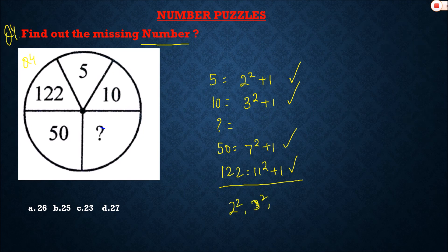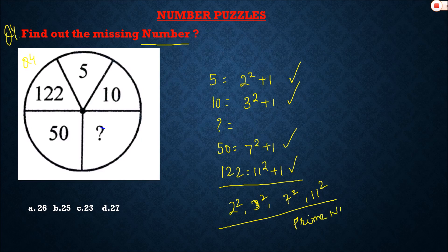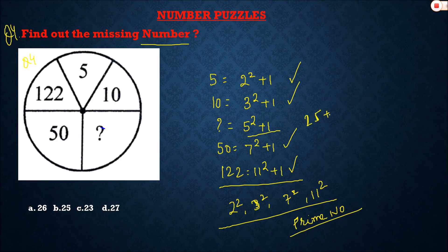So the pattern uses 2, 3, 7, and 11 — all prime numbers. The missing prime between 3 and 7 is 5. Therefore 5² + 1 equals 25 + 1 equals 26. Option A, 26, is the correct answer for question number four.